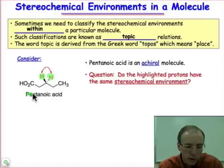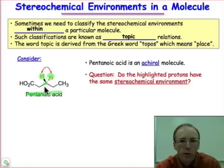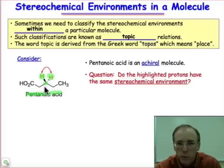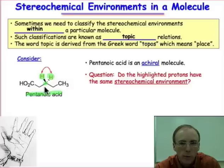Let's take a look at this achiral molecule, pentanoic acid. Those two hydrogen atoms have the same connectivity to that carbon atom. We could ask: are the two hydrogen atoms the same or not the same? That's going to depend on whether we ask that question by using a chiral probe, such as an enzyme active site. An enzyme is made of chiral amino acids, and an enzyme's active site is chiral — and a chiral probe would be able to distinguish those hydrogen atoms as being different.